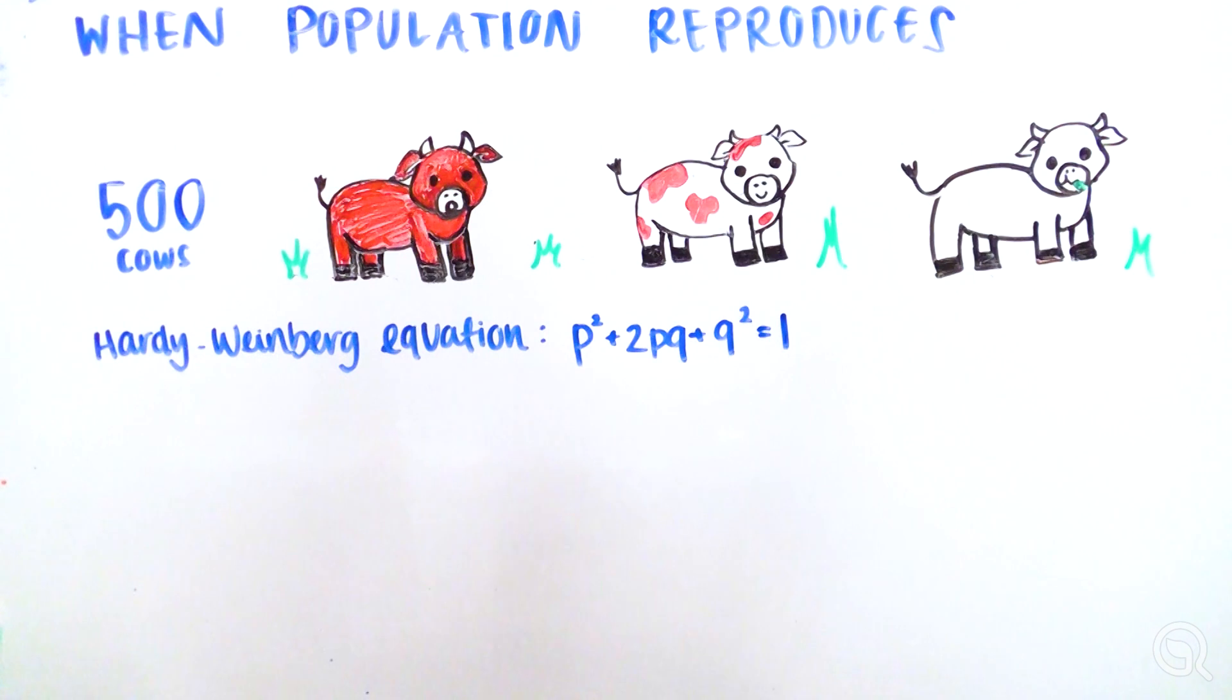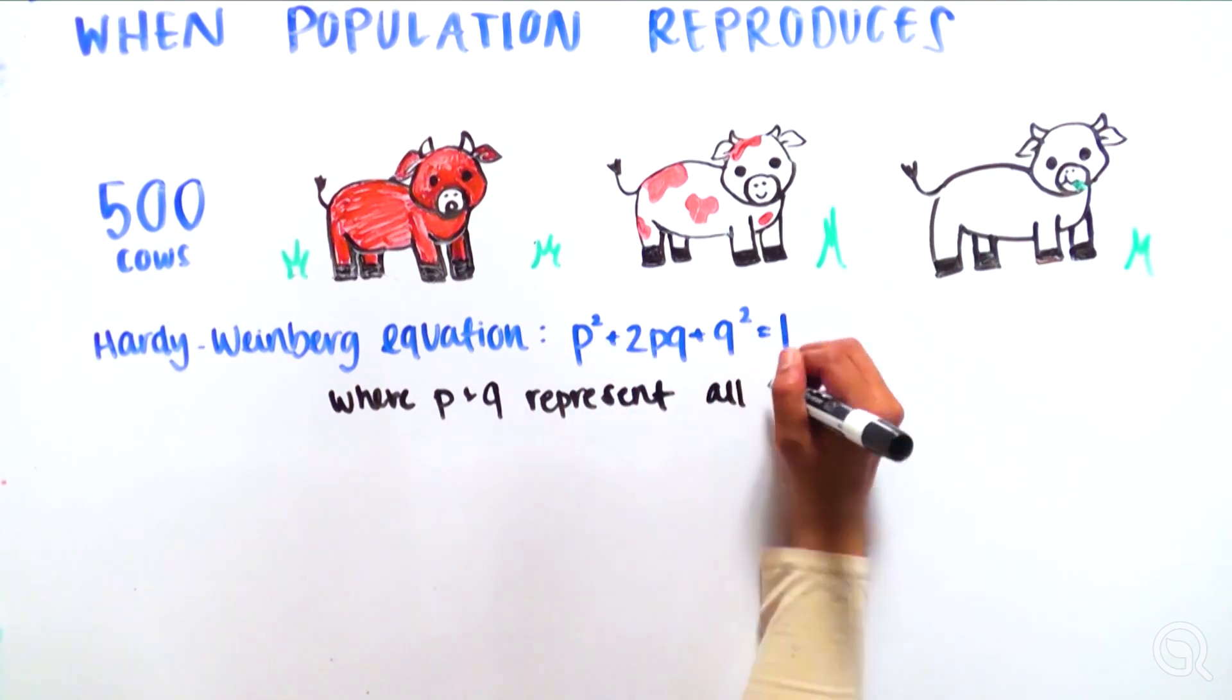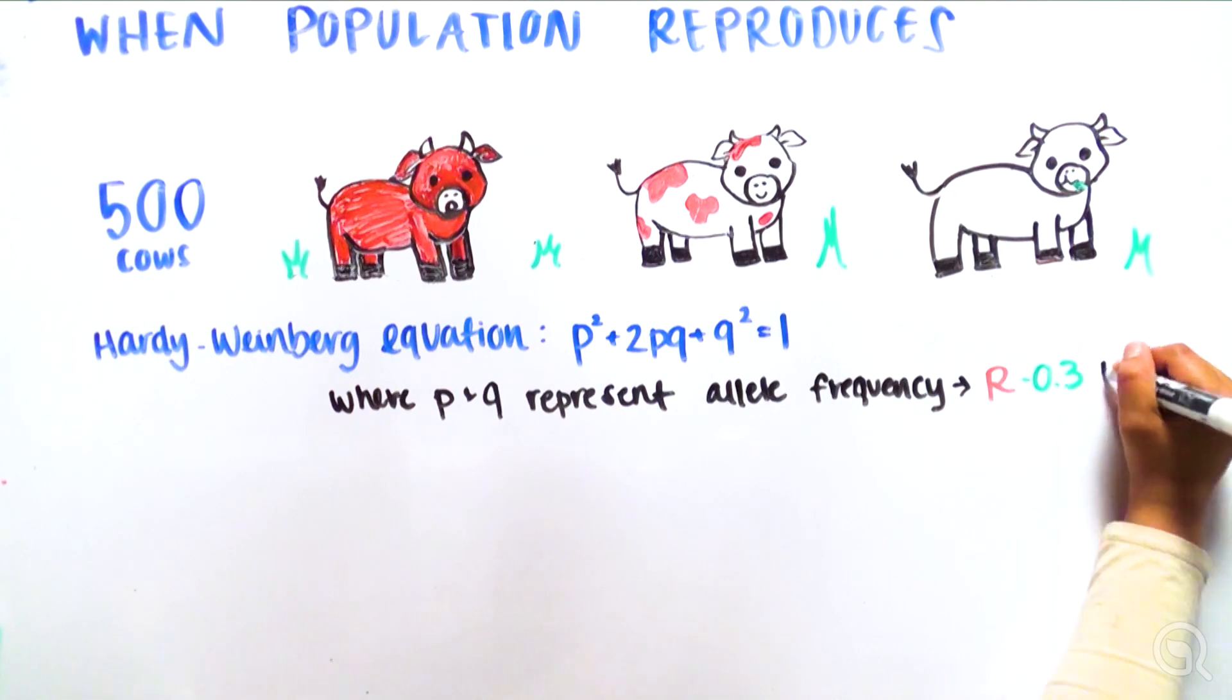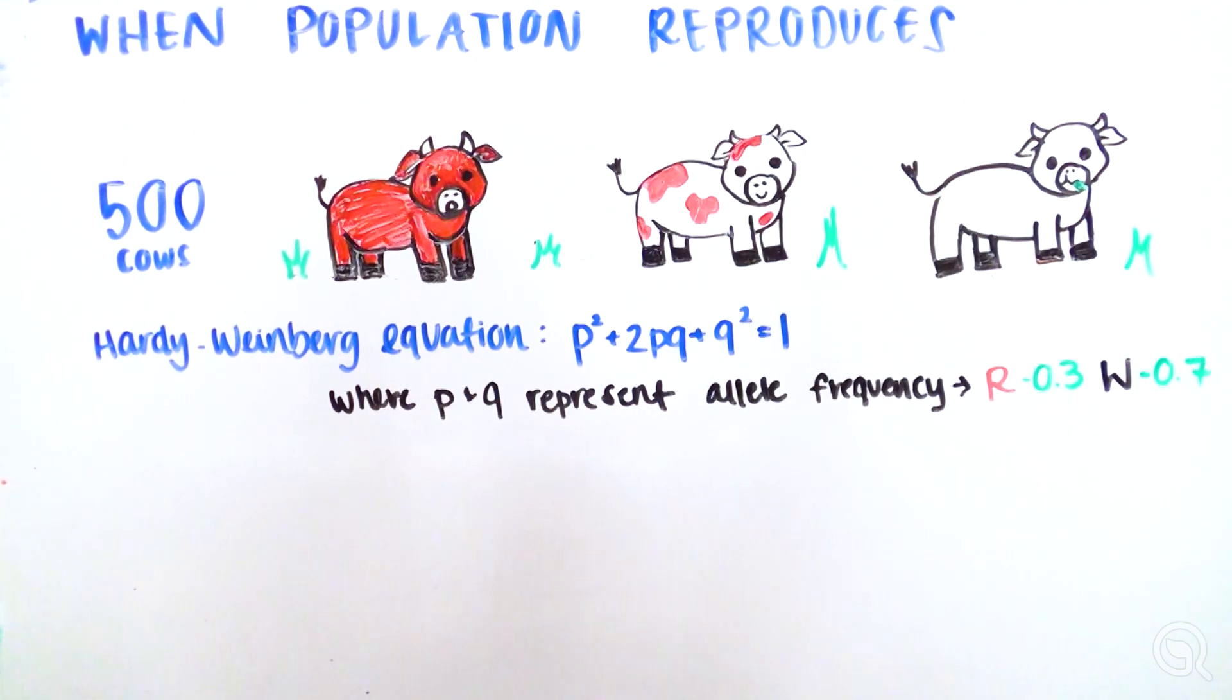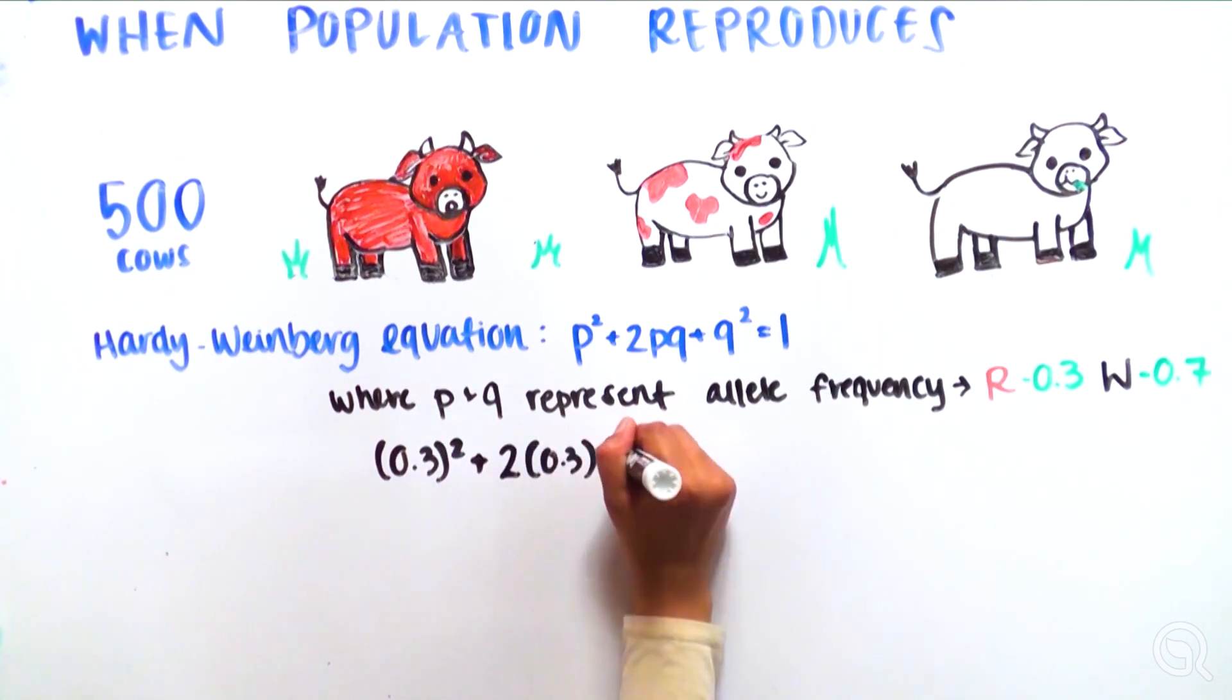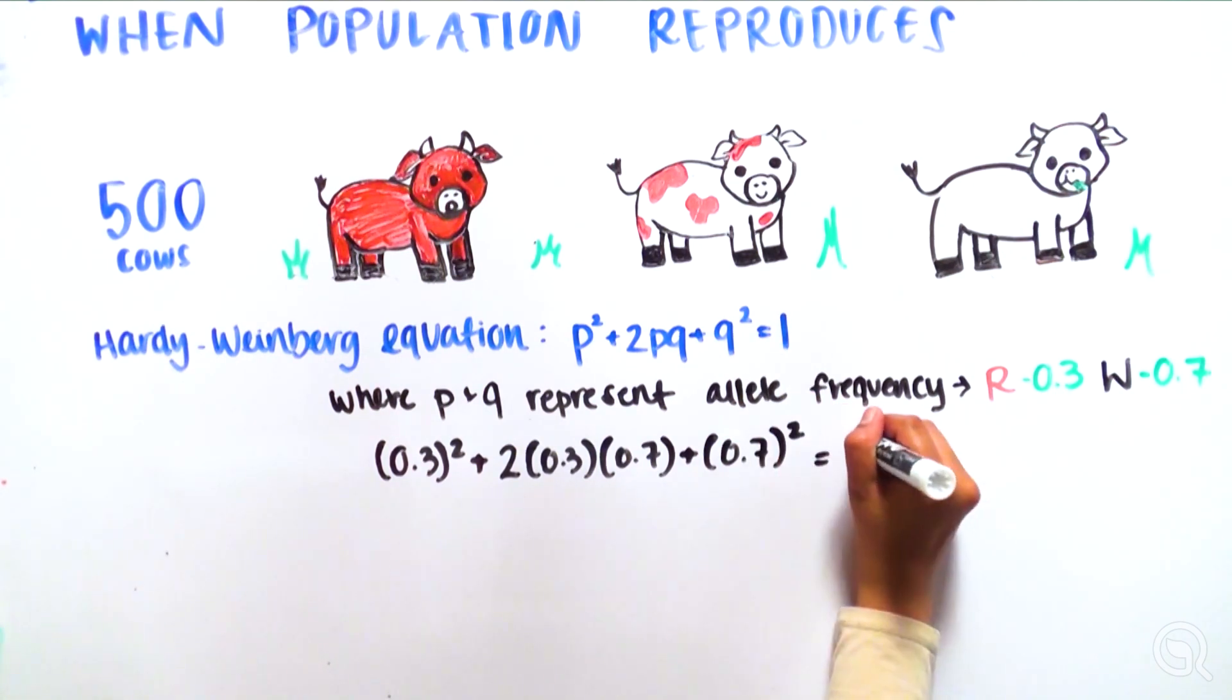To determine whether the population is in equilibrium or not, we can use the Hardy-Weinberg equation: p² + 2pq + q² = 1. In this equation, p is equal to the frequency of one allele (in our case R), and q is equal to the frequency of the other allele (in our case W). Substituting our allele frequencies we calculated before, we get 0.3² + 2(0.3)(0.7) + 0.7² = 1.